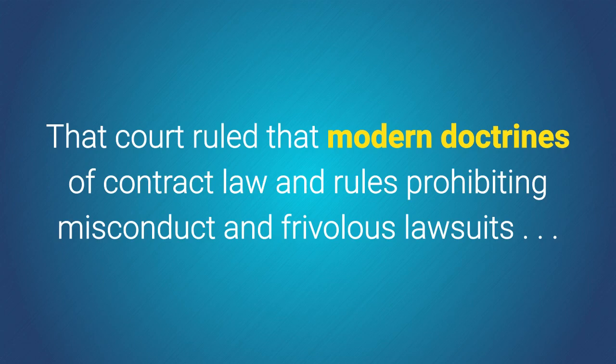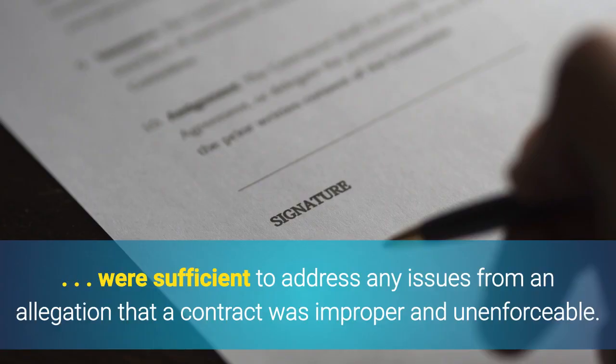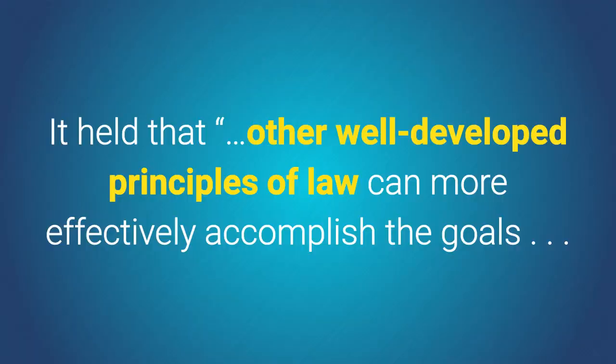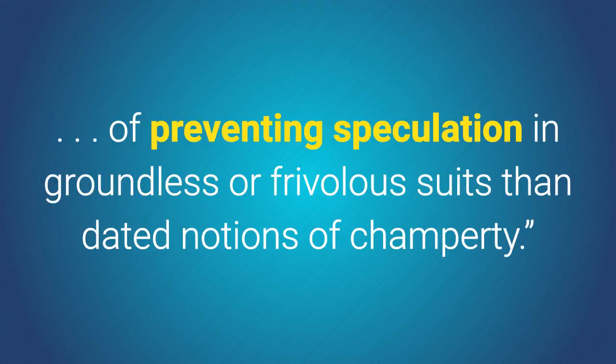That court ruled that modern doctrines of contract law and rules prohibiting misconduct in frivolous lawsuits were sufficient to address any issues from an allegation that a contract was improper and unenforceable. The Supreme Court of South Carolina adopted a similar rationale in Osprey, Inc. v. Cabana Limited Partnership. It held that other well-developed principles of law can more effectively accomplish the goals of preventing speculation in groundless or frivolous suits than dated notions of champerty.